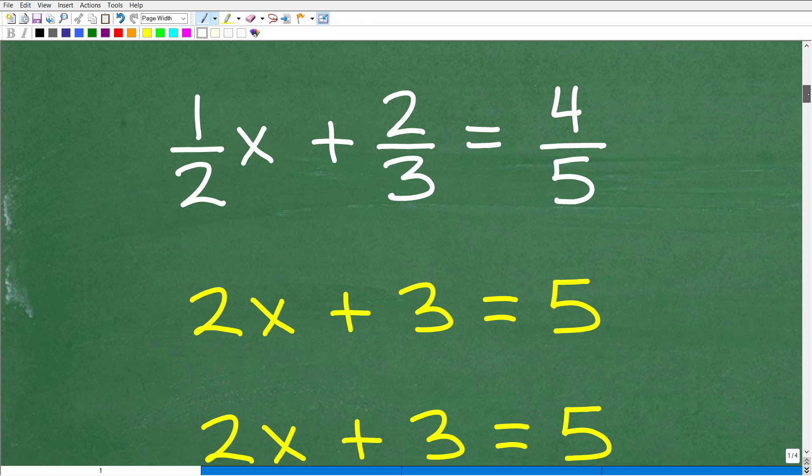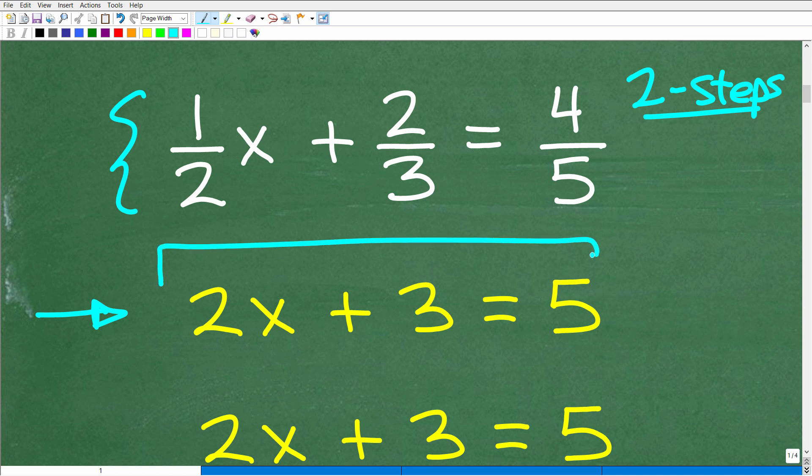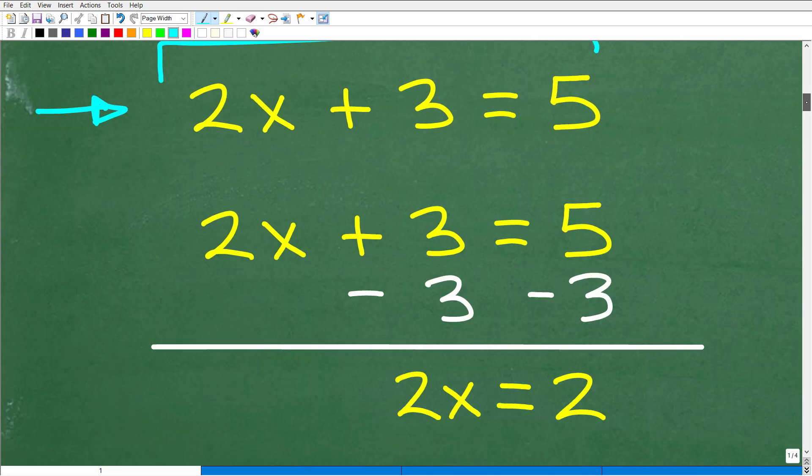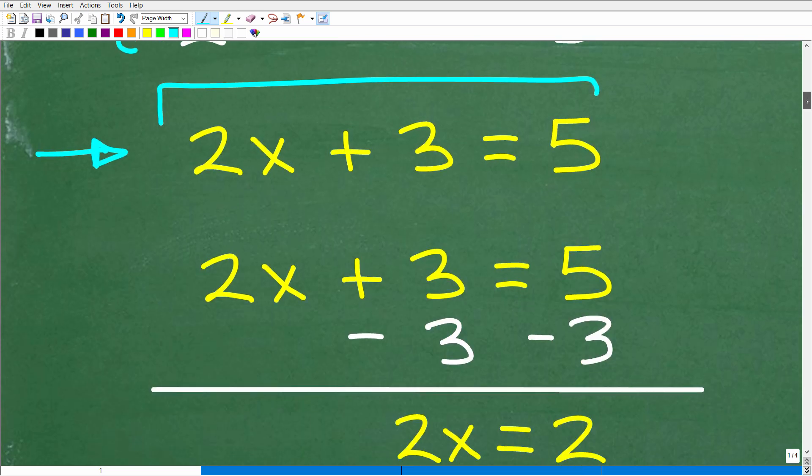And here is the situation, right? We have 1/2 x plus 2/3 is equal to 4/5. Now, when you first start learning algebra, this would be classified as what we call a two-step equation. Two-step, right? So what does that mean? Well, that means we need to take two steps to solve this equation. Let's take a look at an easier example with numbers that are not fractions.